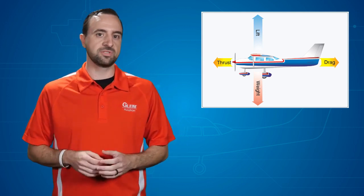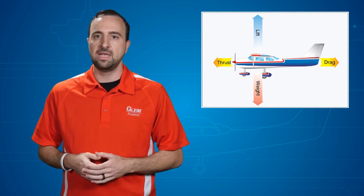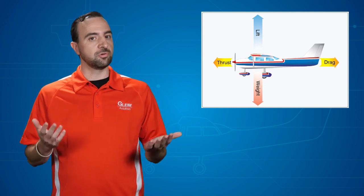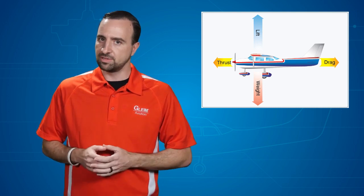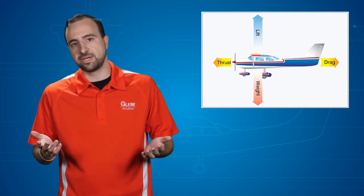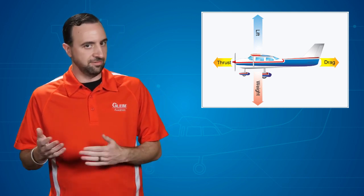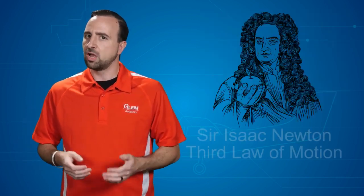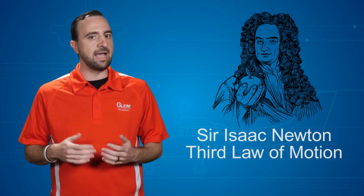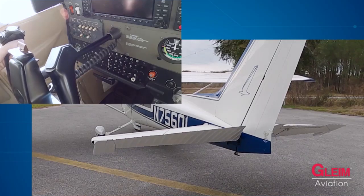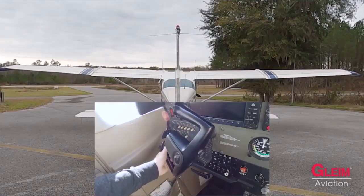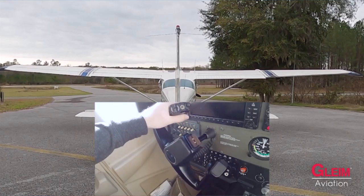Thrust is the forward force produced by the power plant and the propeller; it opposes the force of drag. Drag is a rearward force caused by the disruption of airflow by the shape of the plane, including the wing, the fuselage, landing gear, and other objects. When an airplane is in straight and level flight, the opposing forces are balanced. According to Newton's third law of motion, for every action or force, there is an equal but opposite reaction or force. So whenever we change something, such as producing more thrust or moving the flight controls, the forces become unbalanced. This causes the airplane to react by accelerating, turning, climbing, or descending.